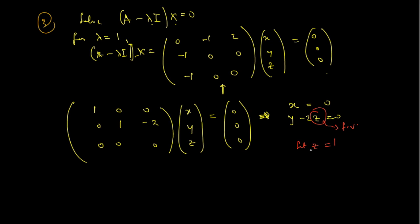Since the free variable is z, I am going to set z to be 1. So if z is 1, then x is 0, while y is 2. With that, I have been able to find k3, corresponding to lambda 3. And that is going to be the vector (0, 2, 1) times e to the power t.